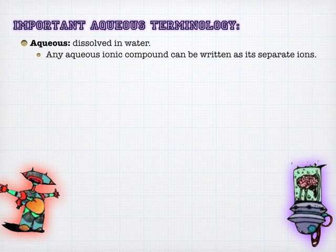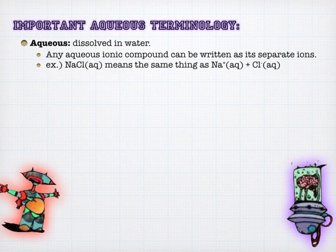One of the most important ideas in this chapter is that ionic compounds, if they're aqueous, actually break up into their component ions. This is a really key idea.